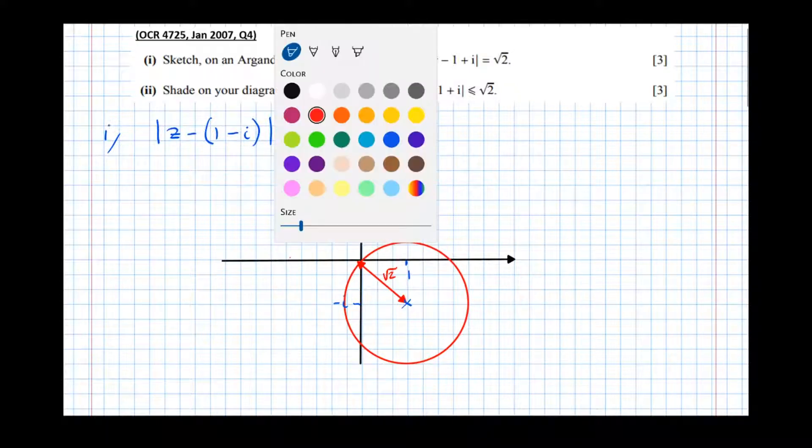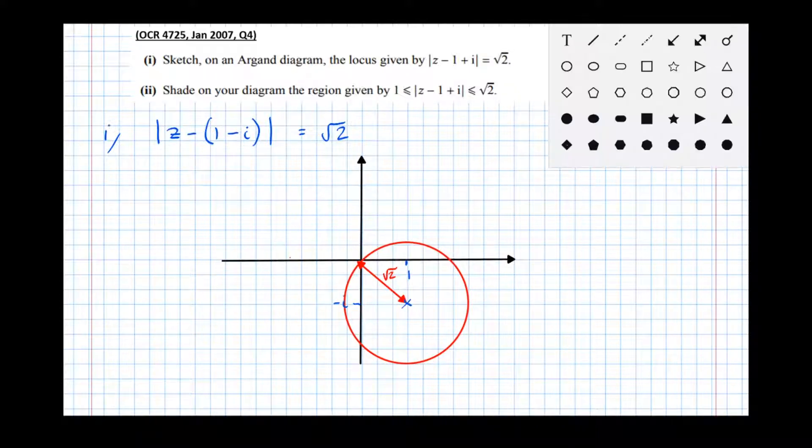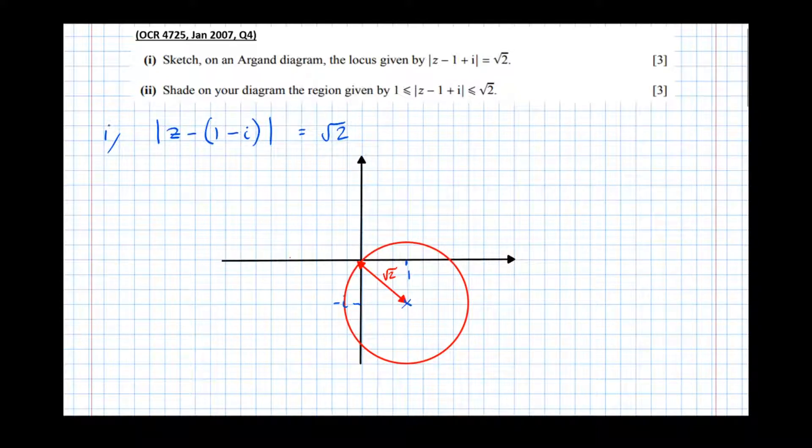So we're going to draw another circle inside. This time the circle is going to be radius 1 which we saw before. Just drawing this other circle which we saw before. We noticed that there was a distance of 1 from the center. So it's those two circles there. So we want the region that lies between √2 and 1.